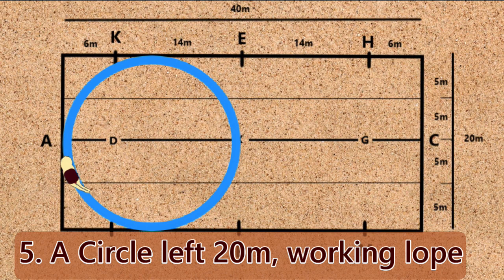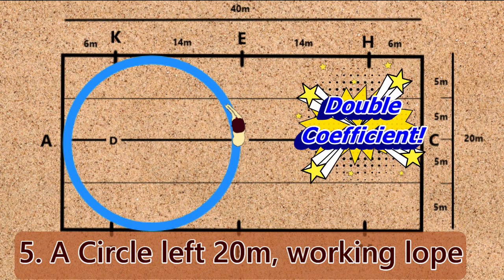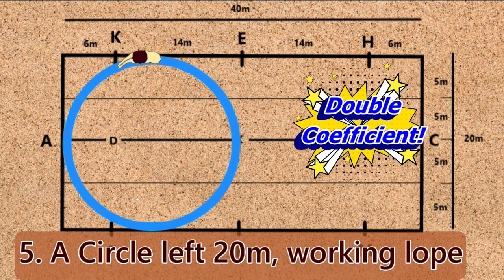Movement 5: A, circle left 20 meters working lope.